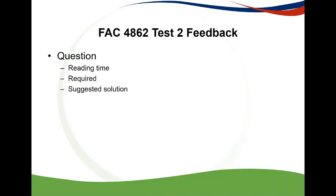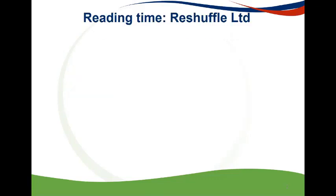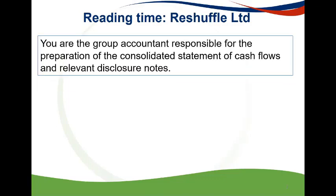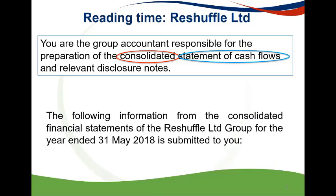The topic covered in Test 4 was IAS 7 Statement of Cash Flows. I will focus on the important information in the scenario. The question indicates that you are the accountant responsible for preparing the consolidated cash flow. This should indicate that you will be required to compile the consolidated statement of cash flows, or at least an extract thereof. It is very important to identify that the financial statements given are the consolidated financials and that the year end for the current year is 31 May 2018.